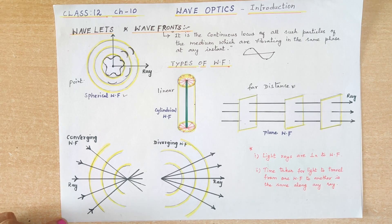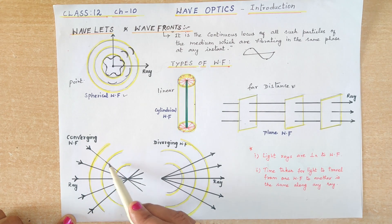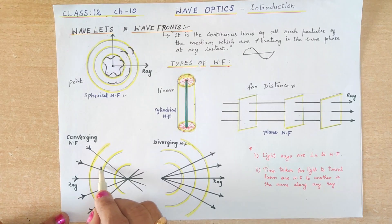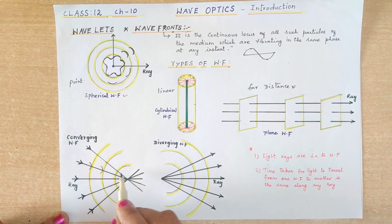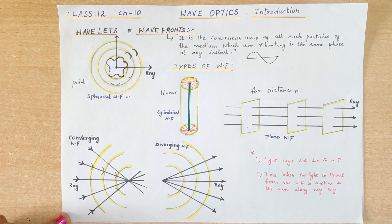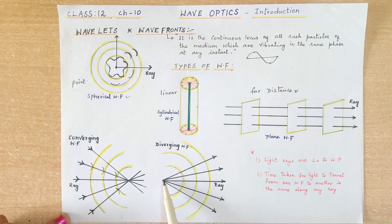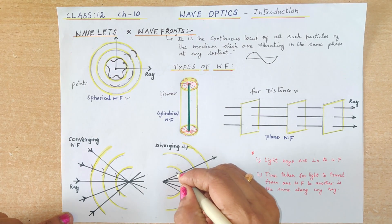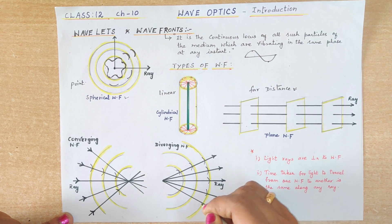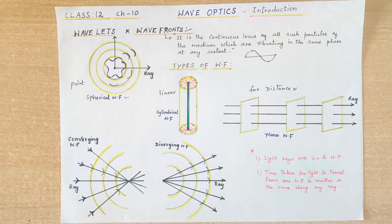There are also converging and diverging wavefronts. For the converging type, the light is incident and gets converged at one point; on its way, all the wavelets are enclosed by such an envelope, giving a converging wavefront. From another point, the light travels and gets diverged, and this pattern — which encloses all the wavelets — is the diverging wavefront. You can see the wavelets are covered, giving us the diverging wavefront. These are also types of wavefronts.